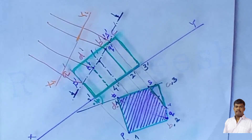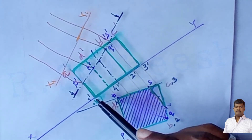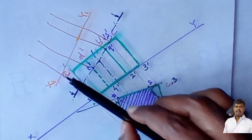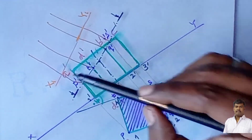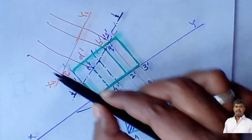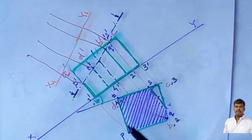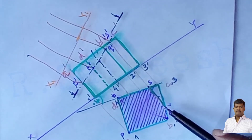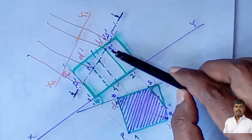Using the trapezoidal method from projection of lines: measure the distance from the XY line to each point in the top view. For point p, measure the distance from XY to p in the top view and mark the same distance from X1Y1 along the perpendicular for p. Similarly, measure the XY-to-q distance — which is the maximum — and mark it from X1Y1 on the q perpendicular.